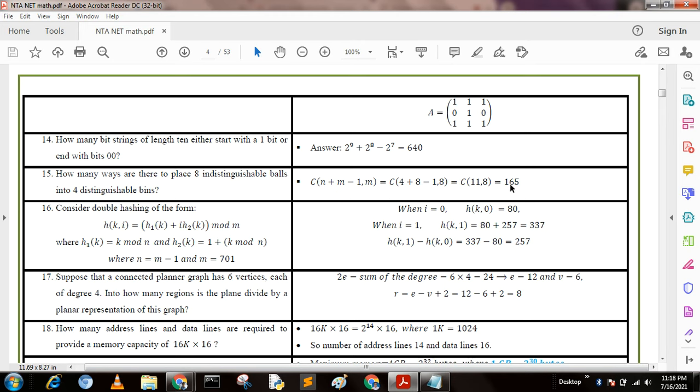Next question: Consider the double hashing of the form with this formula: h1(k) = k mod n, h2(k) = 1 + k mod (n-1), where m = 701. We put this value when i = 0.